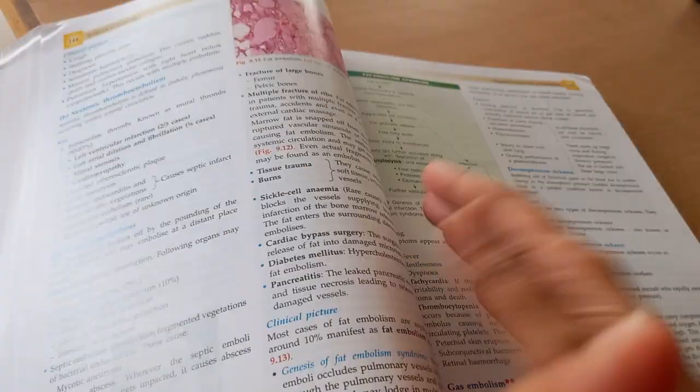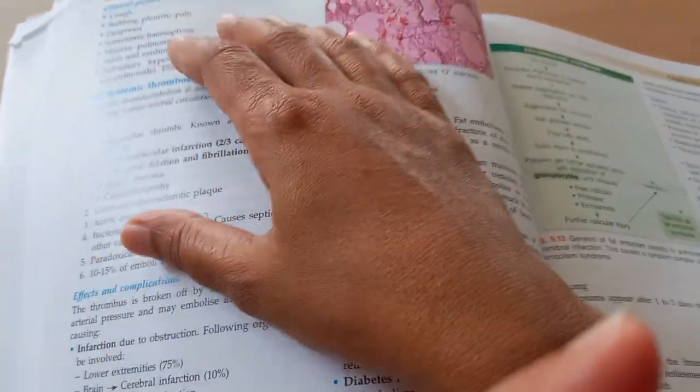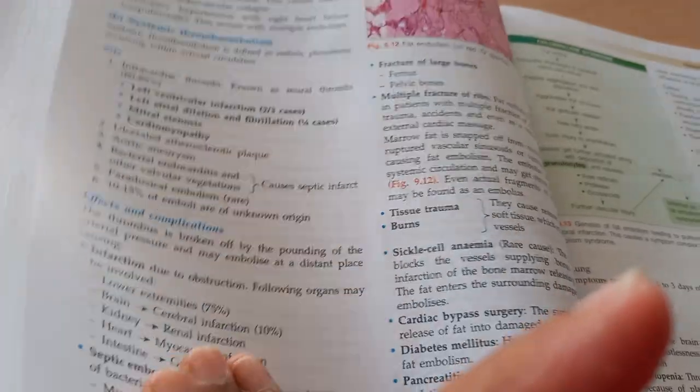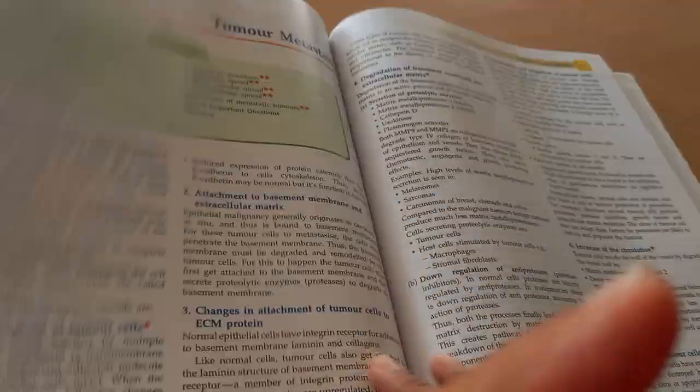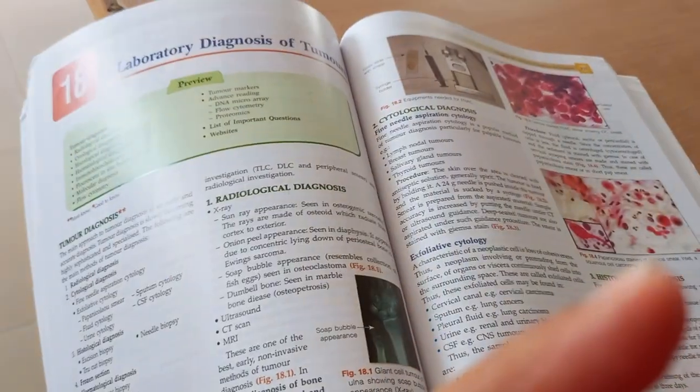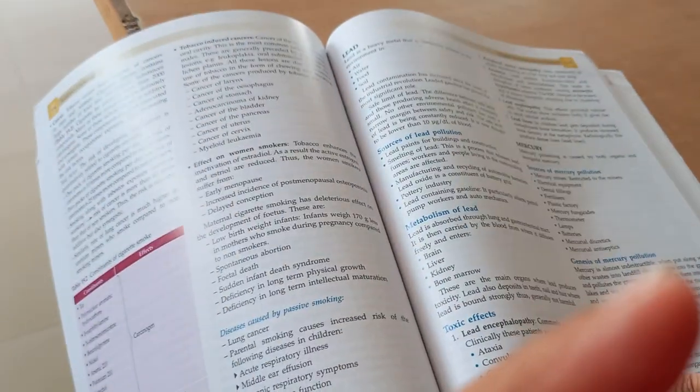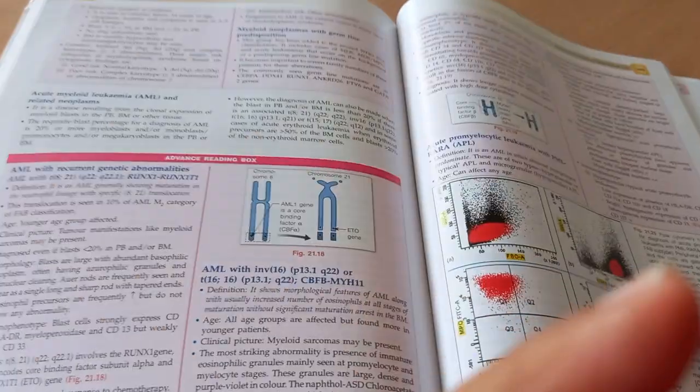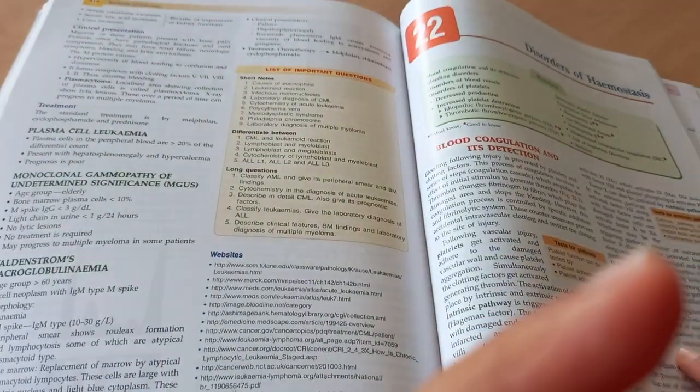The book has glossy pages which you can see how the light reflects here. Even in the library or in the house when you are reading, you have to do like this. Let's focus on the content. Let us see if it has any useful, very different stuff from the other books.